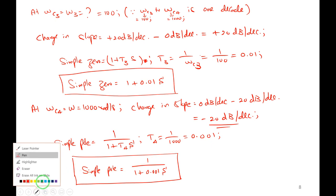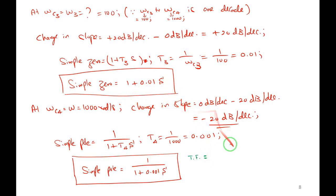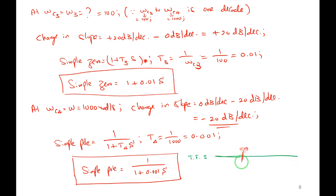At ωc3 = 5 rad/s, change in slope = −20 − 0 = −20 dB/decade — one simple pole. T₃ = 1/5 = 0.2. Simple pole factor: 1/(1 + 0.2s).